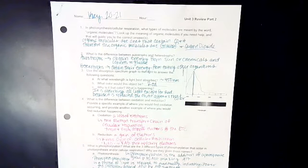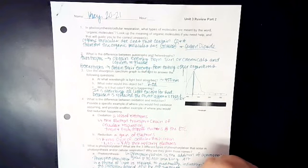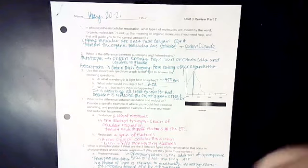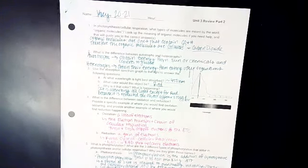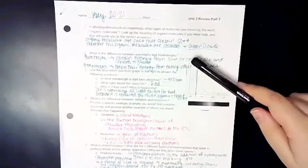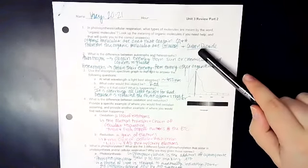So in question 1, it says photosynthesis and cellular respiration, what types of molecules? Remember the term organic molecules. Look at the meaning of organic molecules if you need help, and that will guide you to correct answers. So organic molecules are ones that contain carbon. This is C-O-N-H, so carbon, oxygen, hydrogen. Therefore, our organic molecules are going to be glucose and carbon dioxide.